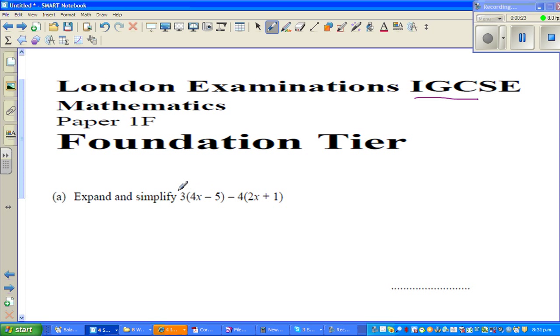You are distributing this 3, multiplying 3 with 4x and 3 with negative 5. So 3 times 4x is 12x, and 3 times negative 5 is negative 15. Now you're multiplying this negative 4, expanding or opening the brackets.